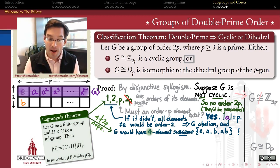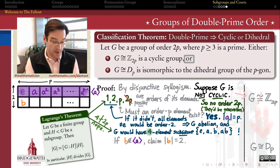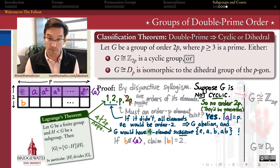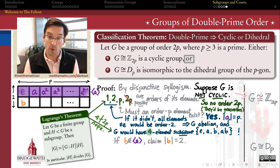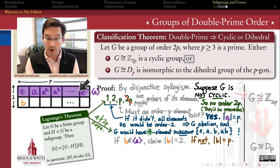Now we know the group has an element of order P. What about elements of order 2? I'll pick an element B outside of the cyclic subgroup generated by A — not a power of A — and prove that B must have order 2. By Lagrange's theorem, if B is not order 2, then either B has order 1 and is the identity (but the identity belongs to the subgroup already), or the order of B must be P.